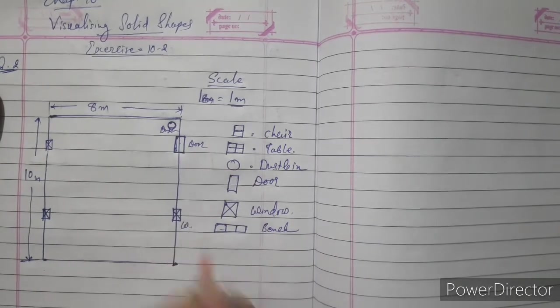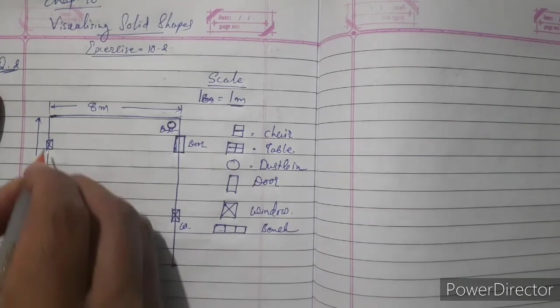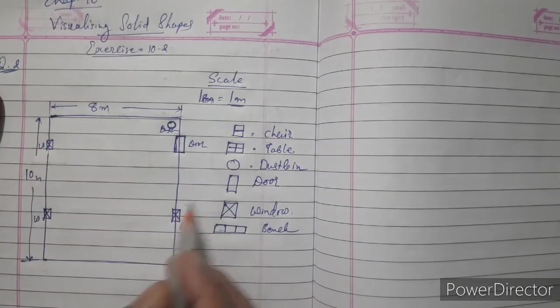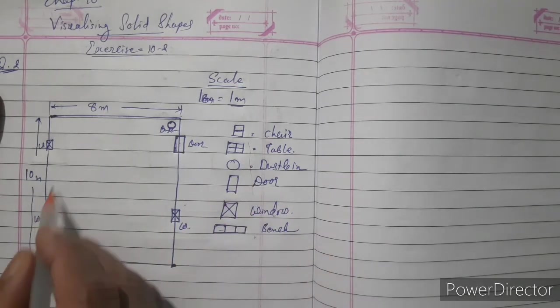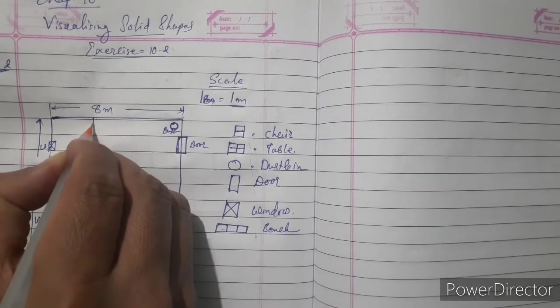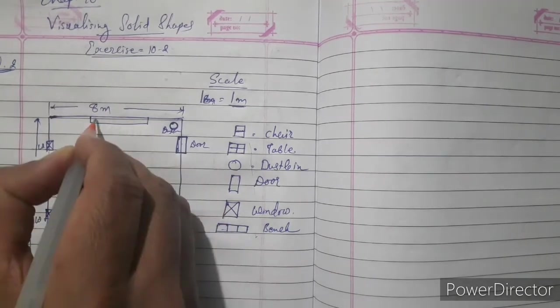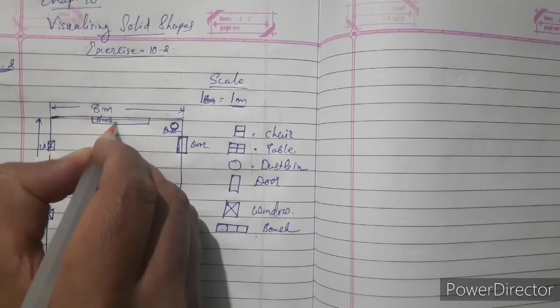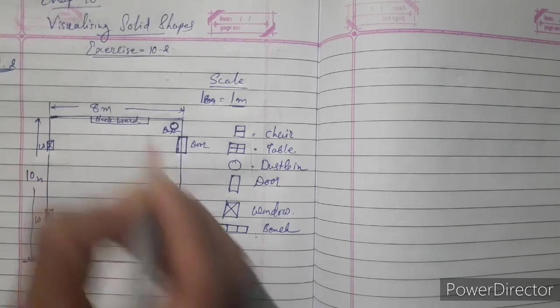Here door, that is window, otherwise write down W. And already we write down the symbols here, so you just draw the pictures only. That is okay. Here our blackboard is there, so write down blackboard.